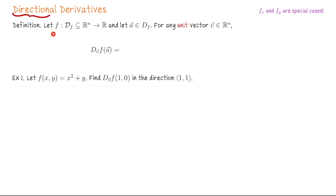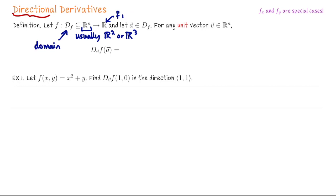This notation here: let f be a map from its domain, which is a subset of n-dimensional space — for example, R2 or R3 — to real numbers. So D sub f is the domain. Typically we work in R2 or R3, and f maps us into scalar values, so f is a scalar-valued function. Imagine we're at some point a in the domain of f. We would like to check how f changes if we move in a particular direction away from a. We describe that direction with a unit vector v.